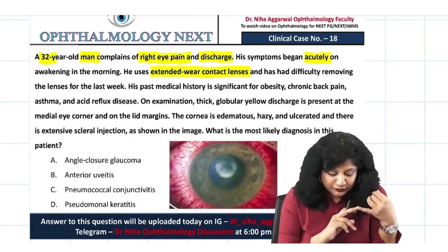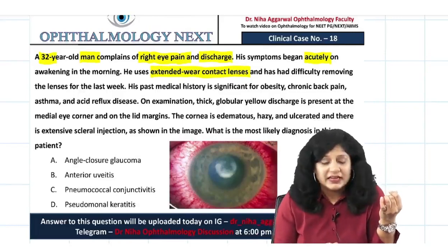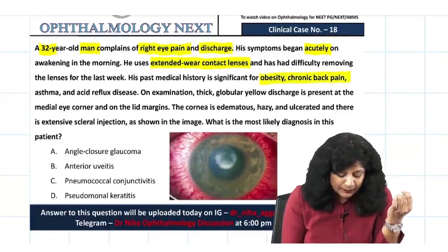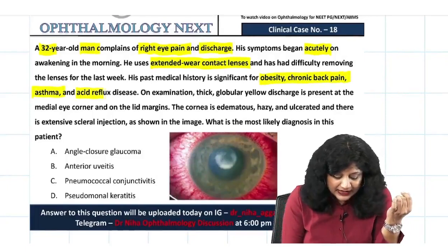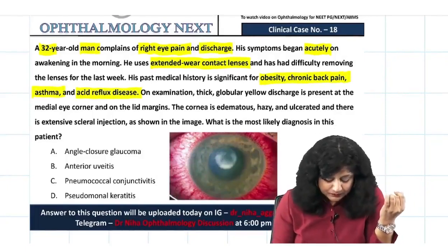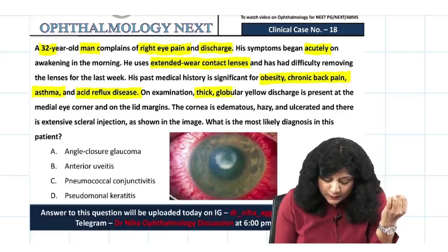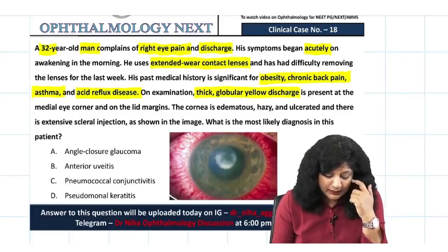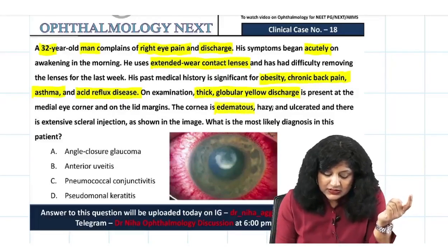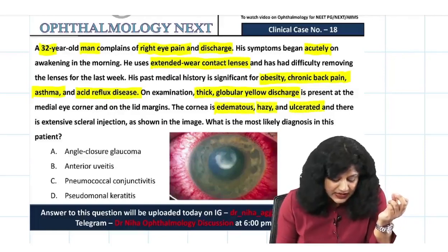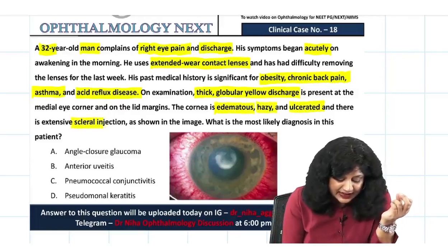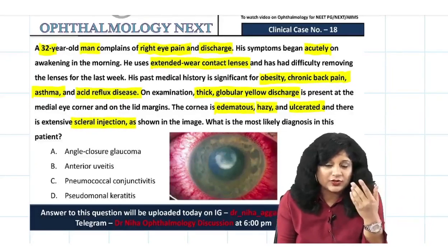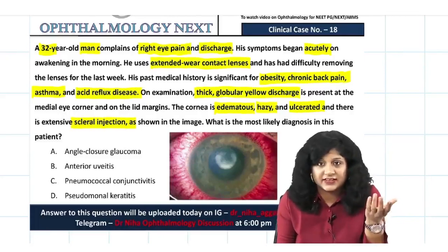He also has difficulty removing the lenses for the last week. His past medical history is significant for obesity, chronic back pain, asthma, and acid reflux disease. On examination, a thick globular yellow discharge is present at the medial corner and on the lid margins. The cornea is edematous, hazy, and ulcerated, and there is extensive scleral injection. An image has been provided to help correlate these findings.